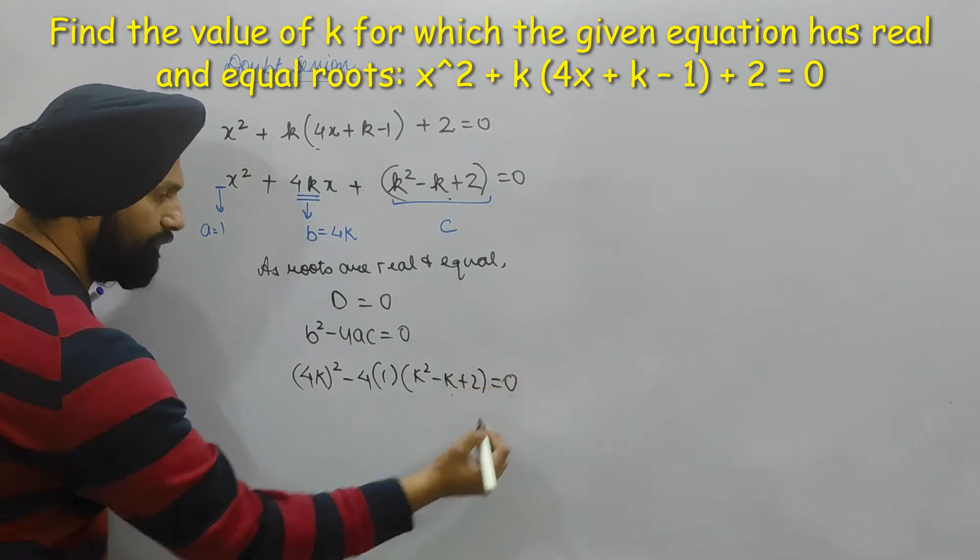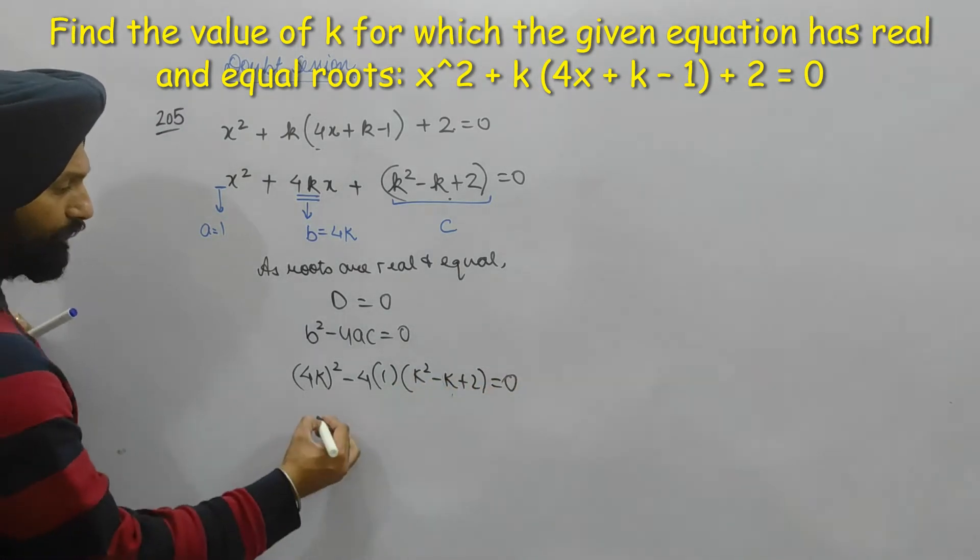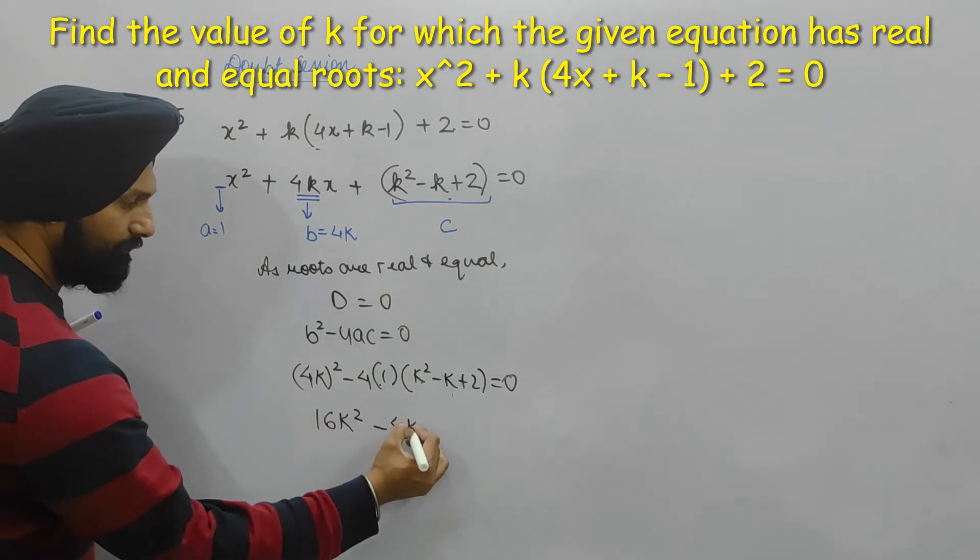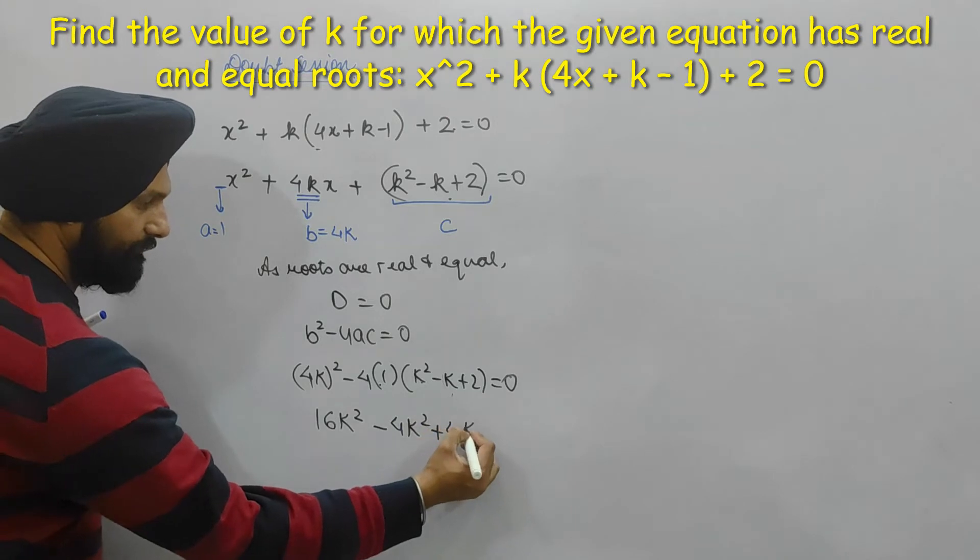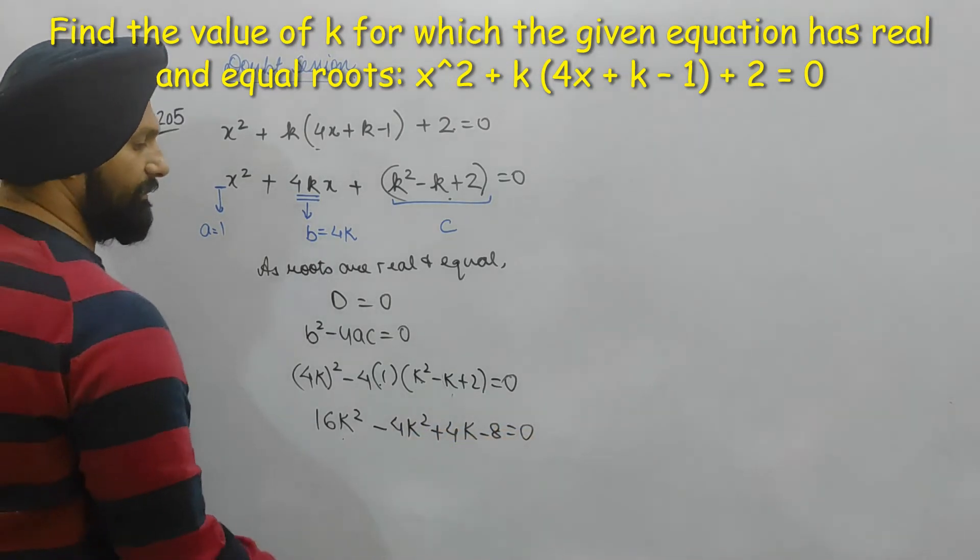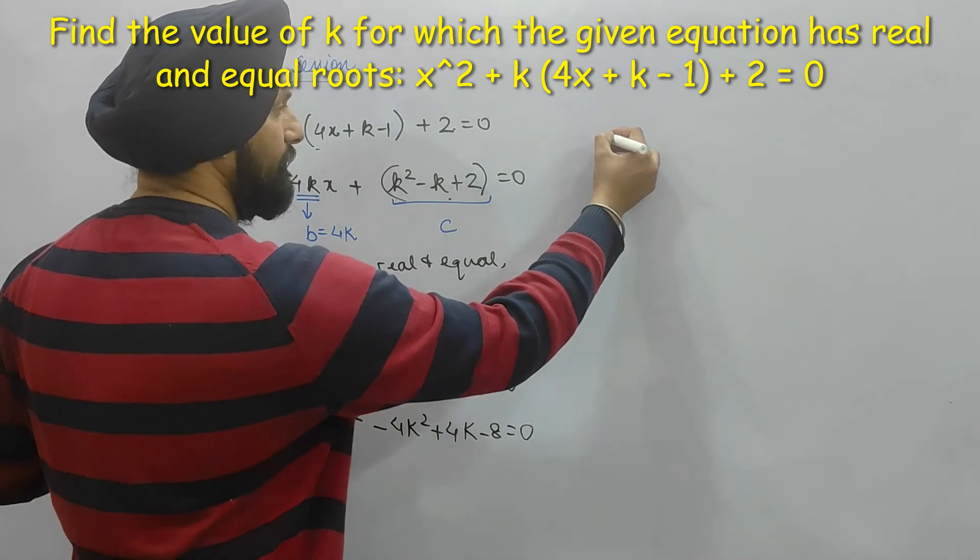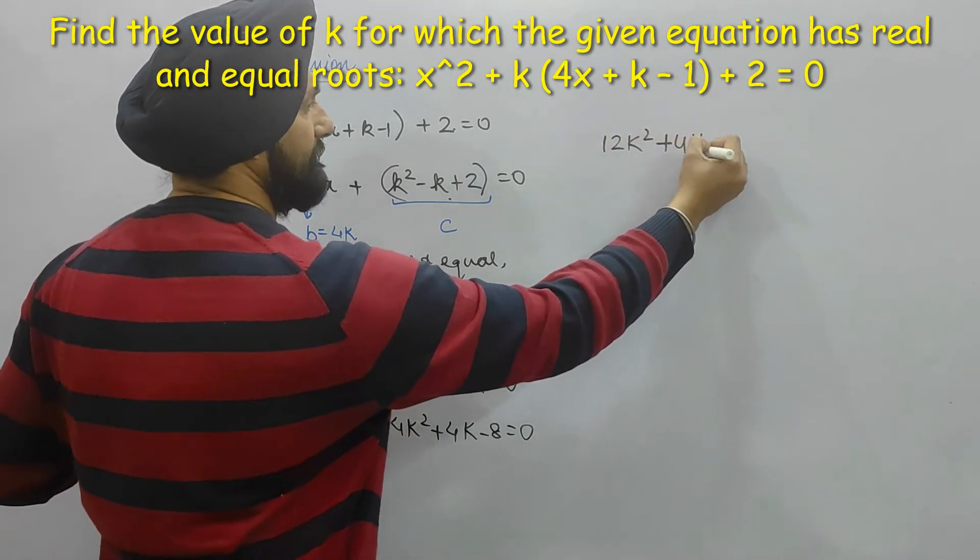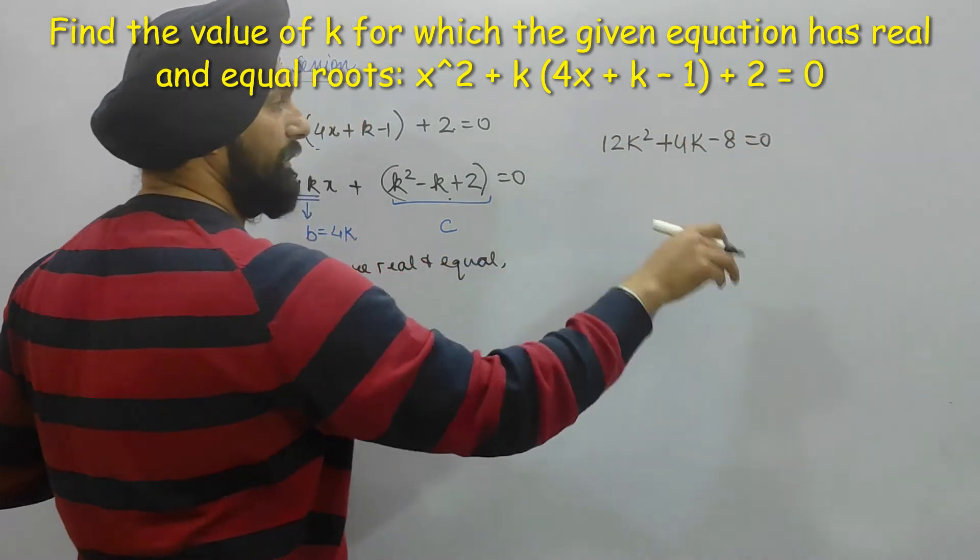is equal to 0. I hope this is clear: 4k square, minus 4k square plus 4k minus 8 is equal to 0. So 16k square minus 4k square is 12k square plus 4k minus 8. Still we can make 4 out of it, so 3k square plus k minus 2 is equal to 0.